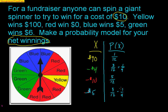That is the probability model for net winnings. Only 1/12 of the time will you win that $90 — all other cases cost you money, so a lot of your money goes to the fundraiser. Make sure you understand the idea of net winnings and how to match up the associated probabilities. And please make sure you truly understand mutually exclusive — that is a big topic in this class.